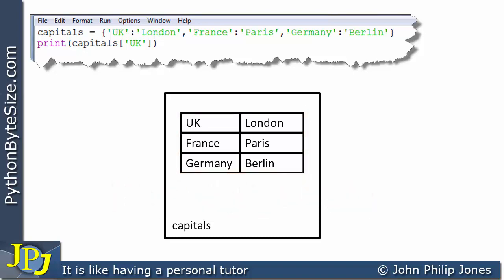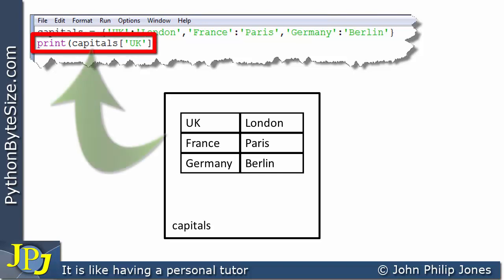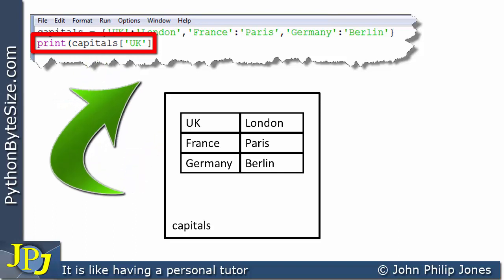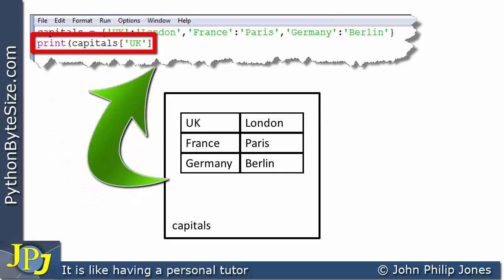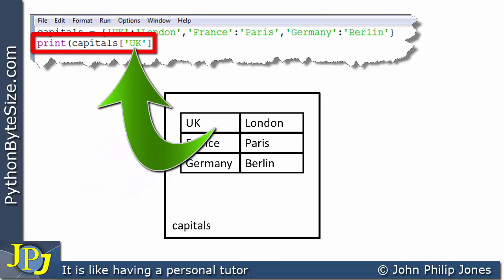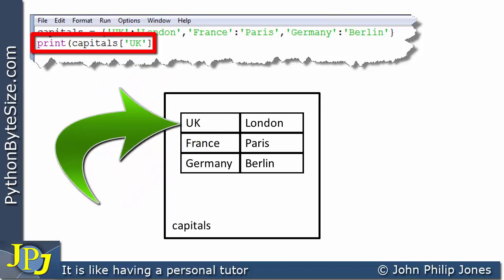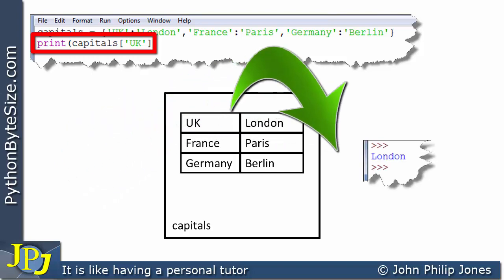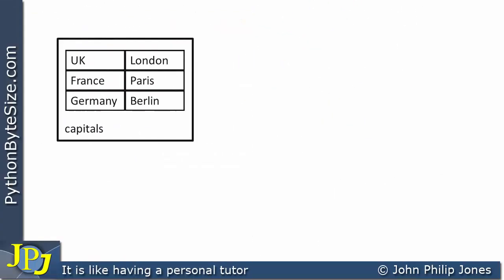When this program runs and we come to this line, it's going to refer to the container object — which we can see here is capitals. It's then going to look for the key UK, which is found in this item here. The value is obtained and will then be printed to the runtime, as you can see here.